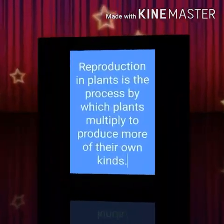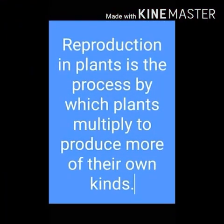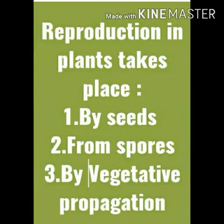Children, let us know what is reproduction in plants. Reproduction in plants is a process by which plants multiply to produce more of their own kind. In plants, reproduction takes place by seeds, from spores, and by vegetative propagation.